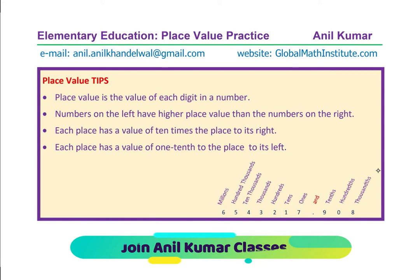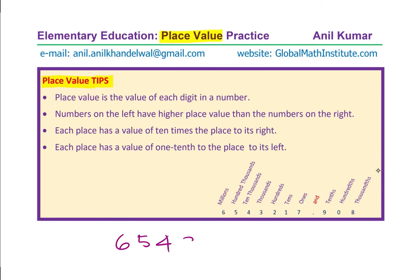Here are a few tips. Let us understand what place value is, and then we will begin with the solution of these 5 questions. Place value is the value of each digit in a number. Here we have the number 6,543,217.908. Every digit has a different value depending on where it is placed.